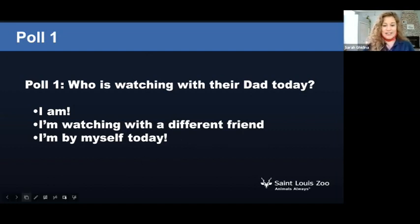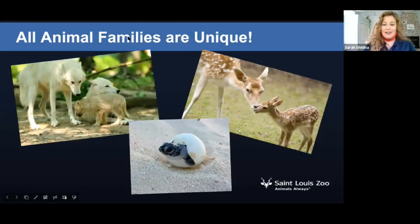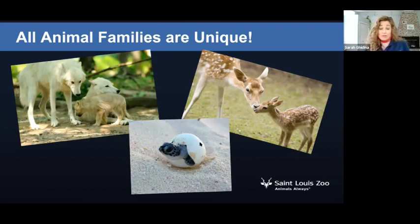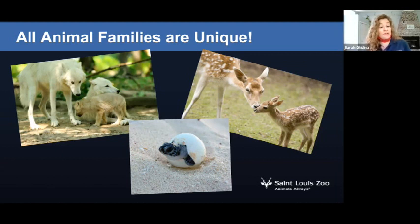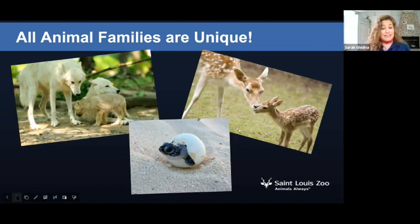Let's get started with the learning. All animal families are unique. Some animals live with both mom and dad. Some animals are raised only by their moms. And some animals even raise themselves — like the sea turtle. They don't have any help from their parents; the eggs are laid, they hatch on their own, and then they have to make it all the way to the ocean by themselves. All of these options work wonderfully for the animals involved — it's how they've adapted, it's how their species works.